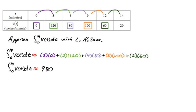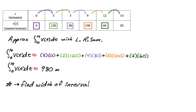On the AP exam you could technically leave it unsimplified, but I'm going to simplify it. I got that the definite integral from zero to 14 of v of t dt is approximately 980. We integrated meters per minute over minutes, so we end up with meters. When doing a left Riemann sum, find the width of the interval and take the value at the left endpoint.